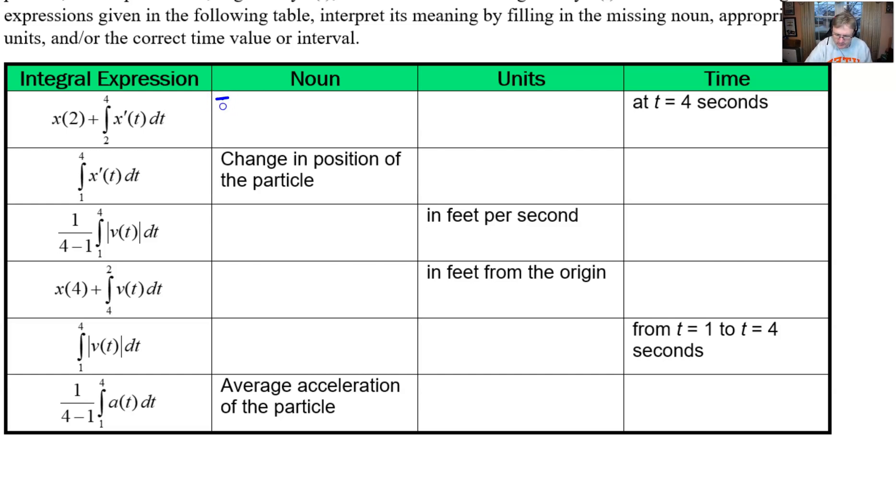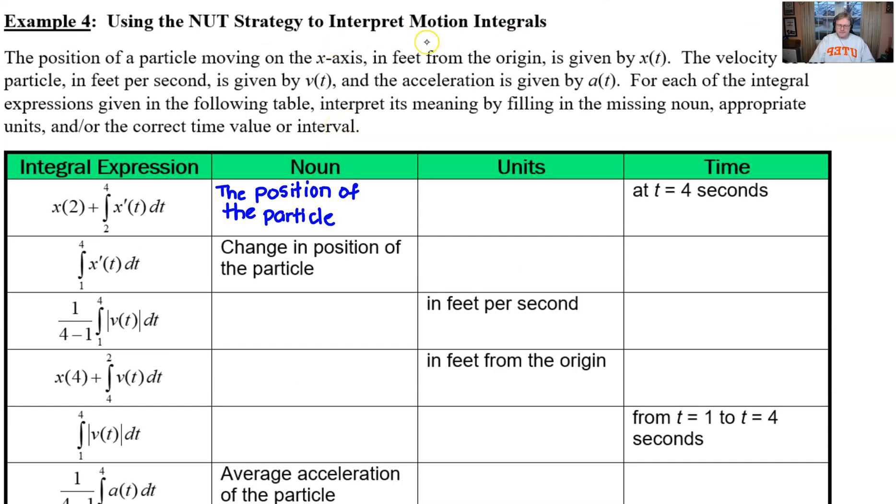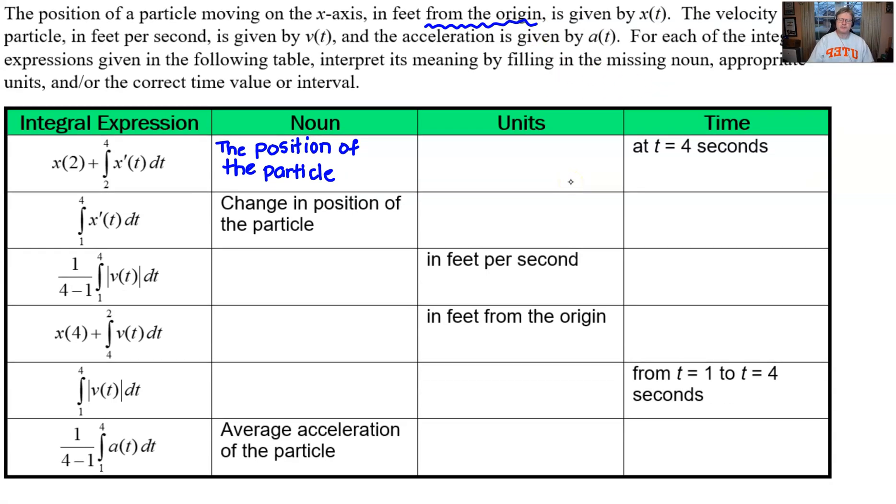And so that's your noun and your units. So for your noun, you're going to say the position of the particle. Now the units are a little interesting because you weren't given anything other than feet, right? But you've got to really throw in the idea that we have to have some reference point. It's not like it's feet from the ground, like an object moving in the air. So we're always going to measure this back to the origin. So our units will be in feet from the origin.